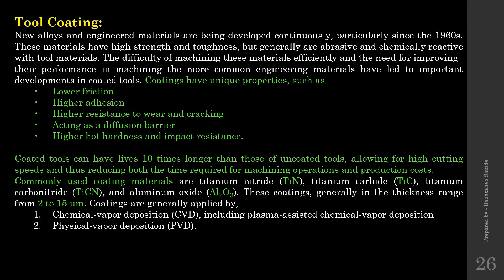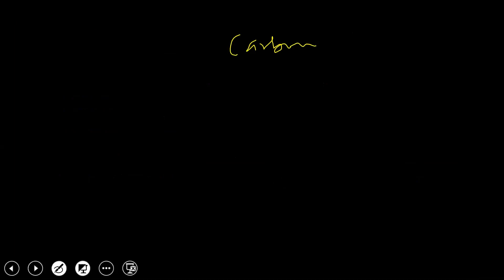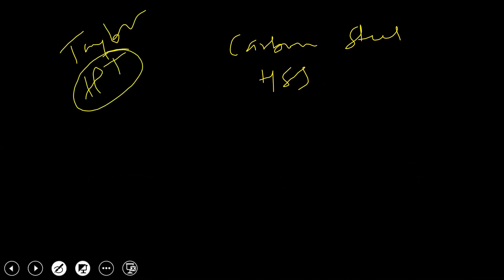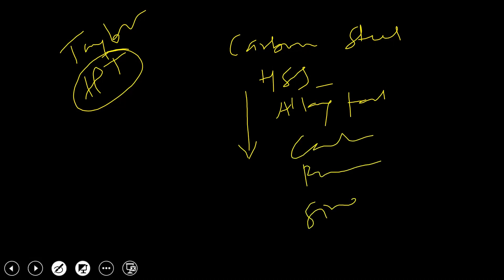In many cases, we saw the development of tool materials. The first material used was carbon steel, then high speed steel came into existence once Taylor discovered the heat treatment process. Researchers were able to convert normal steel into high speed steel by applying an alloying process. Once high speed steel was developed, additional materials followed: alloy tools, carbides, polycrystalline materials, and single crystal materials.